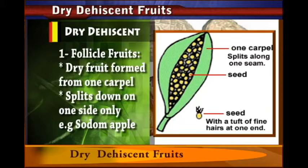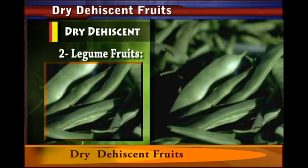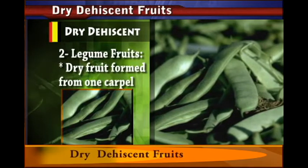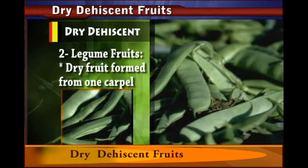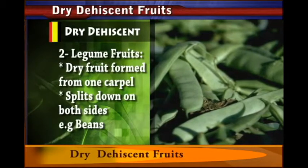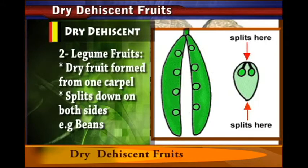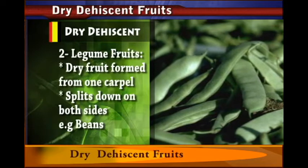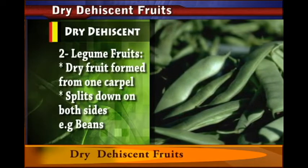Another type of dry dehiscent fruit is the legume. Legumes are dry fruits also formed from one carpel, but they split down both sides. Examples of legumes include beans. When you look at beans, they split down both sides and release the seeds. Those are the legumes, which are also part of the dry dehiscent fruits.